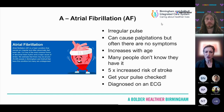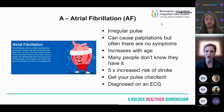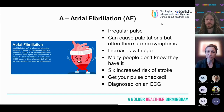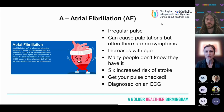The heart can cope well with atrial fibrillation as long as it's not going too fast, and the heart rate can be managed easily with tablets, usually beta blockers. But the biggest problem with atrial fibrillation is it causes a five times increased risk of stroke. Our stroke risk goes up as we get older anyway, and having atrial fibrillation significantly increases that risk further.